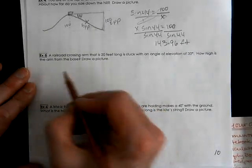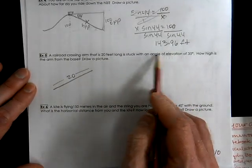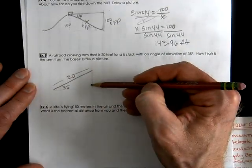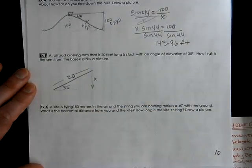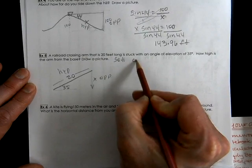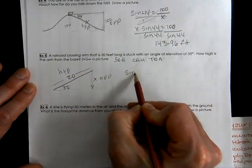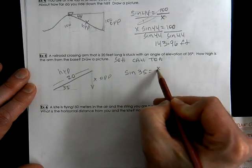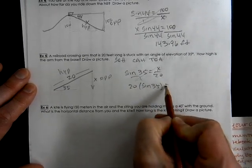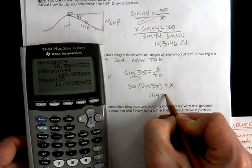A railroad crossing arm is 20 feet long and has an angle of elevation of 35 degrees. The question is: how high is it? We're going to use the opposite and the hypotenuse, so using SOHCAHTOA we use sine. Sine of 35 equals x over 20. Cross-multiplying: x equals 20 times the sine of 35. Using our calculator, 20 times sine of 35 is approximately 11.47 feet.